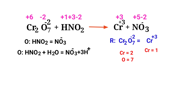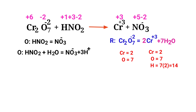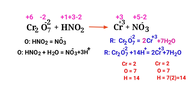Now balance the number of atoms in the reduction half reaction. To balance the chromium atoms, put a coefficient of 2 in front of Cr3 plus. The chromium atoms are now balanced. To balance the oxygen atoms, produce water molecules. The oxygen atoms are balanced. To balance the hydrogen atoms, produce H plus ions. The number of atoms are now balanced in the reduction half reaction.